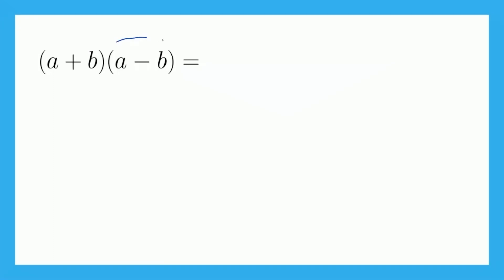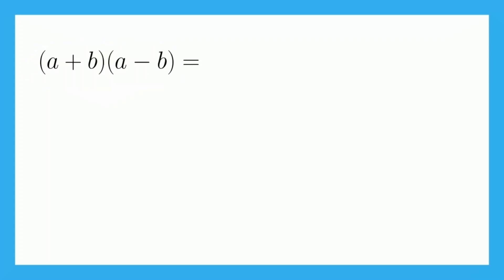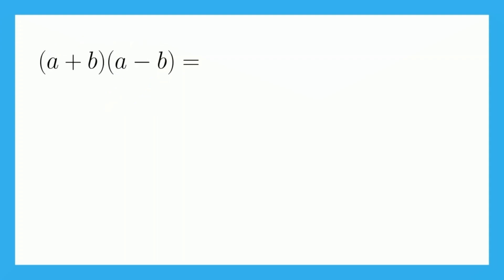So if I gave you this expression right here and I said expand and combine like terms, you could do it the long way. You could say a times a plus a times negative b plus b times a plus b times negative b. And then you would combine like terms if possible. But you'll see that there is a shortcut here because our final answer is going to be what's called a difference of squares.